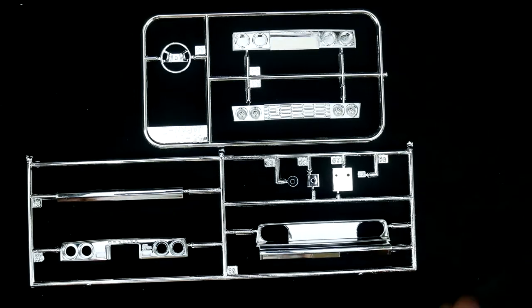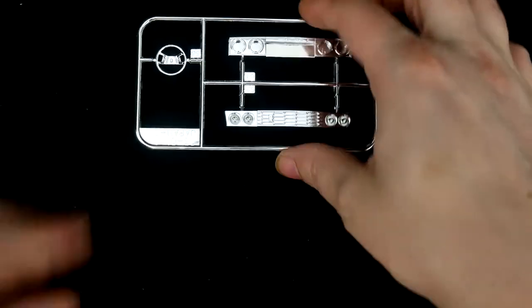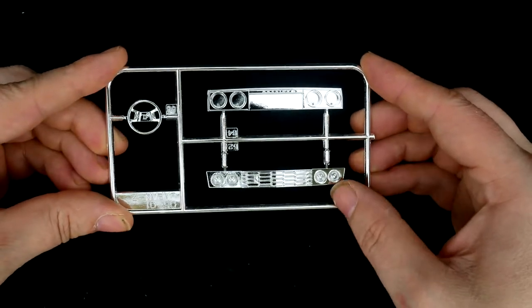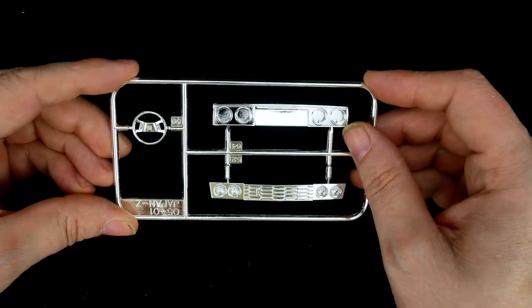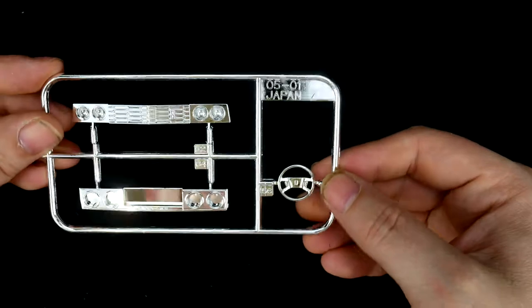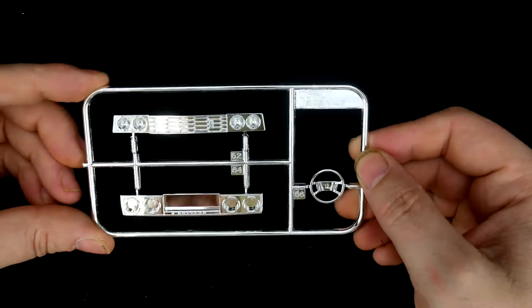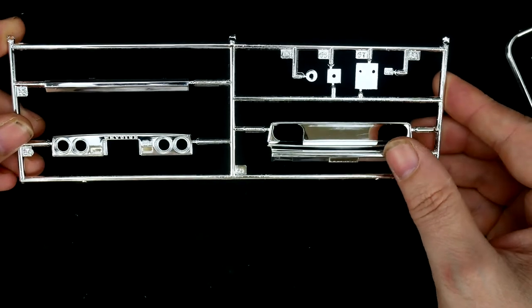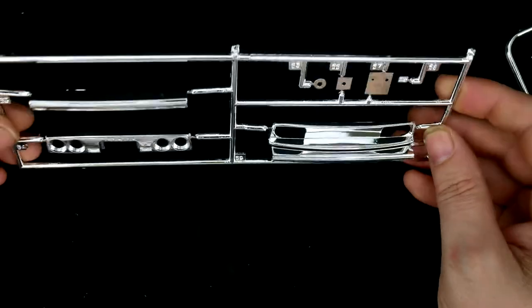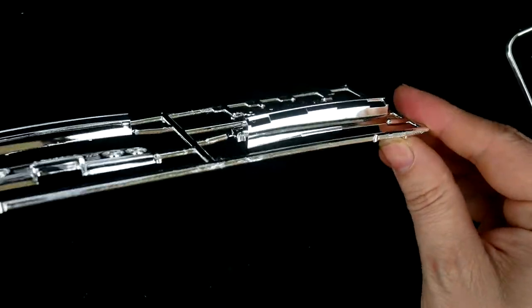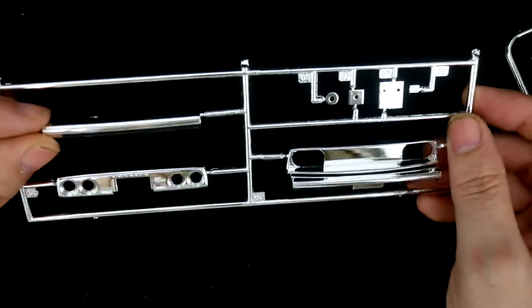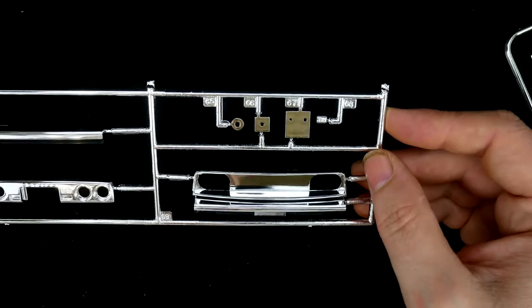A couple of chrome parts trees to look at. First this one here which has the front grille, headlight, and the rear taillight panel. The next set has a front grille front piece with the chrome part of the bumper attached, the rear taillight piece and the chrome section of the rear bumper, and some other bits.